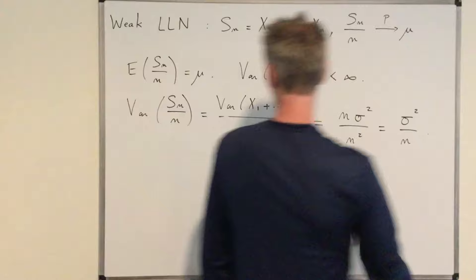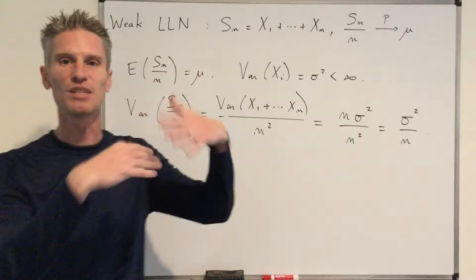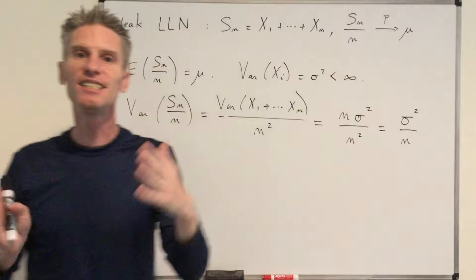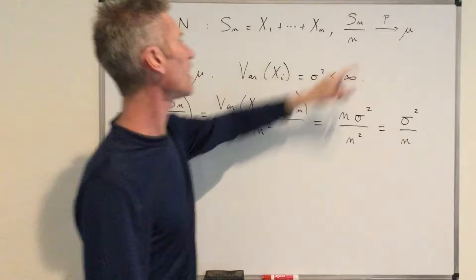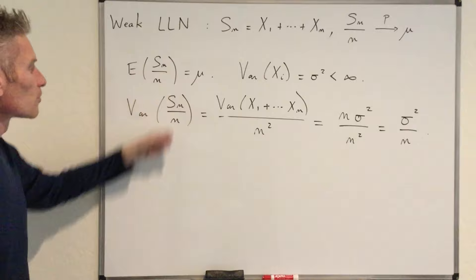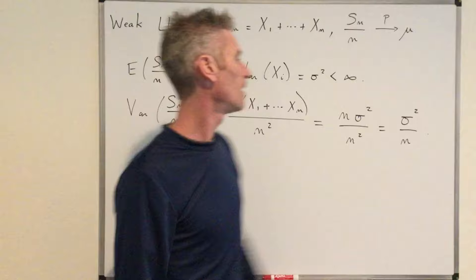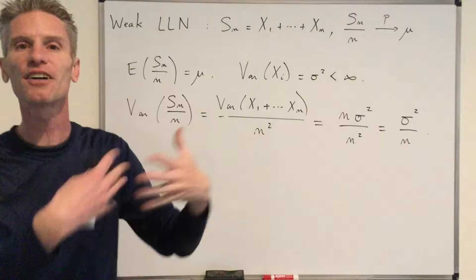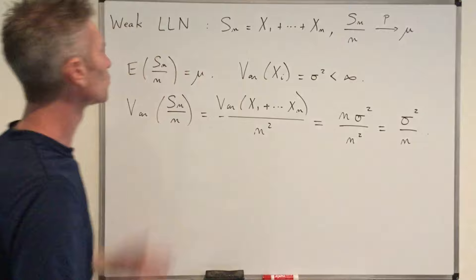And that's in this calculation of the variance that we understand why there is convergence to a deterministic number — why this random object becomes more and more deterministic as n increases. If n is large, you don't change the expected value, but the variance is divided by n here. So as n increases, the variance decreases to zero, and indeed this object becomes more and more deterministic. That's the spirit behind the law of large numbers.